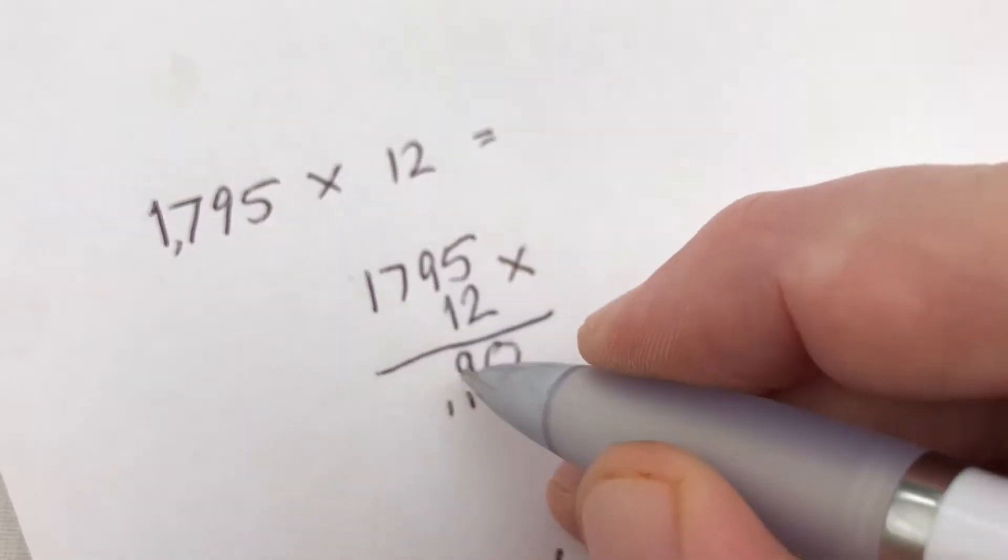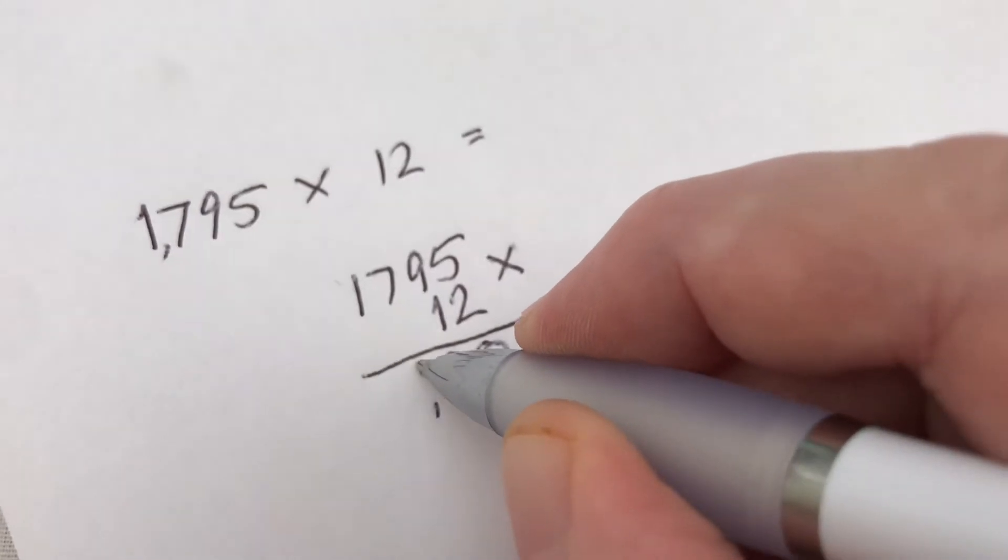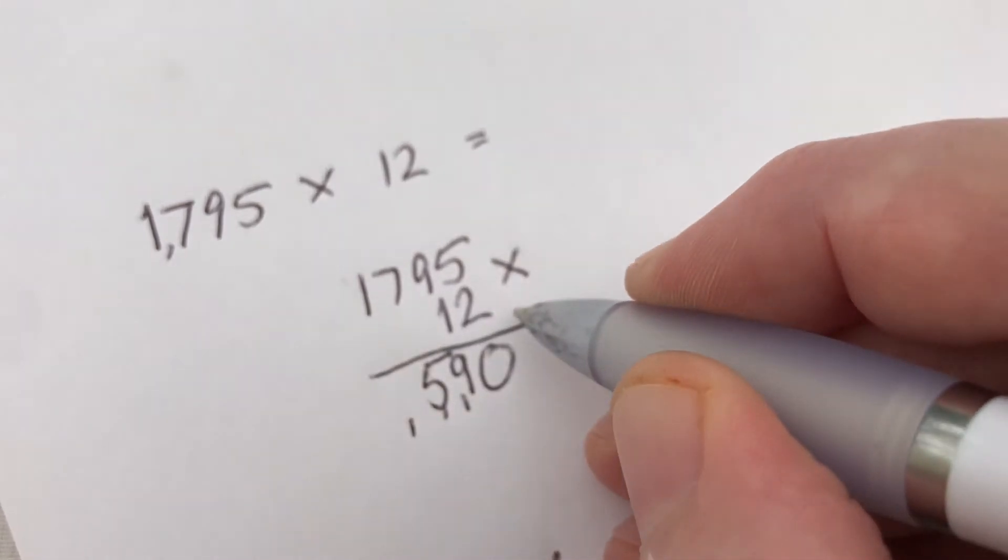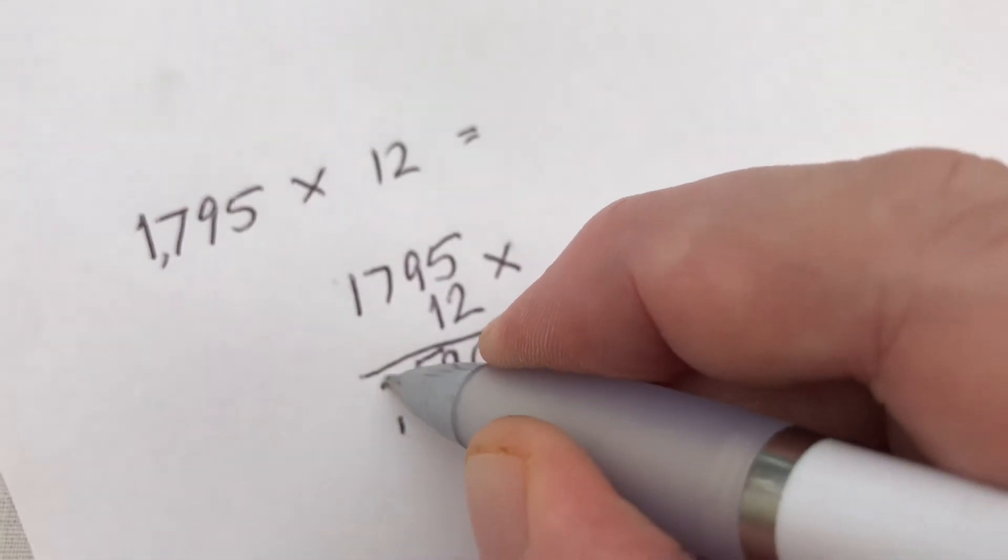2 times 7 is 14, plus the 1 is 15. Put down 5, carry the 1 to the next unit. 2 times 1 is 2, plus the 1 there is 3.